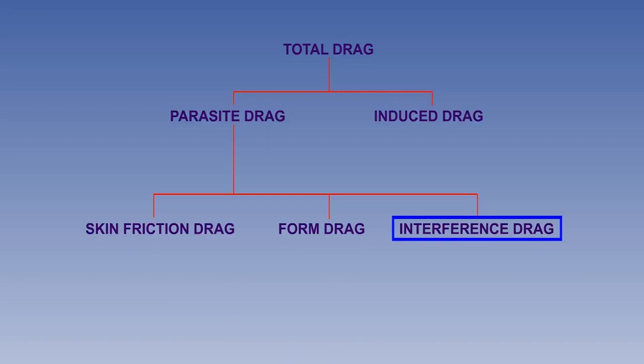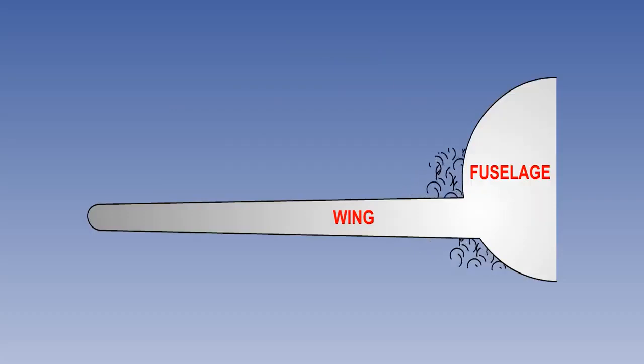The final element of parasite drag is interference drag. When considering a complete aircraft, the parasite drag in total will be greater than the sum of its parts. This additional drag is the result of interaction between the boundary layers of adjacent parts of the aircraft.